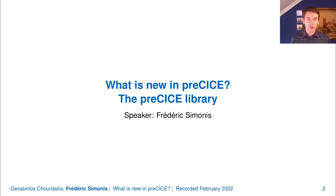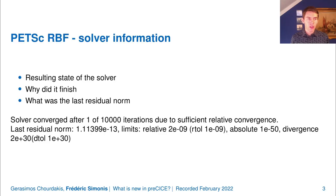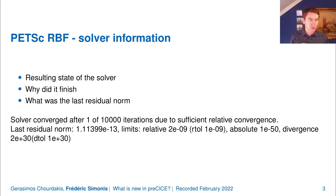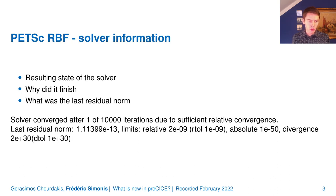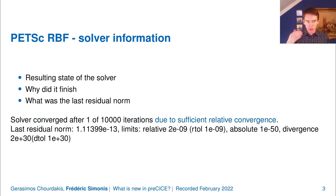Let me start with some quality of life improvements. First, we changed how the Patsy RBF mapping functions communicate their state with the user. We now provide more information that the user can act upon. We tell you the resulting state of the solver and how long it took to converge, why it converged — in this case due to sufficient relative convergence — as well as the last residual norm and the limits used by the internal solver.